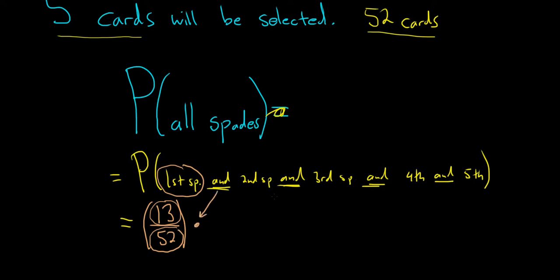The 'and' tells you to multiply. We want the second card to be a spade card. You've taken a spade card out, so now there are only 12 ways to pick a spade card and 51 ways to pick a card. The third one, there's only 11 spade cards and 50 cards. The fourth one, 10 over 49, and the very last one would be 9 over 48.